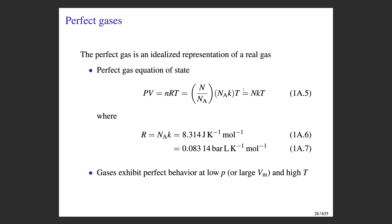You don't necessarily have to use number of moles. Rearranging, you can express the pressure-volume product in terms of number of molecules N and the Boltzmann constant k, giving PV = NkT. This is the Boltzmann constant from the prologue.